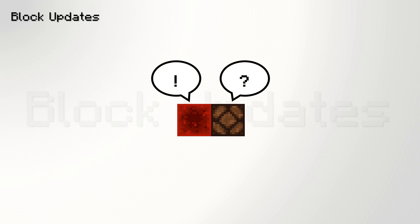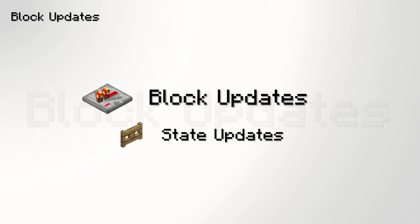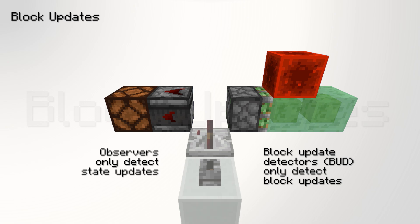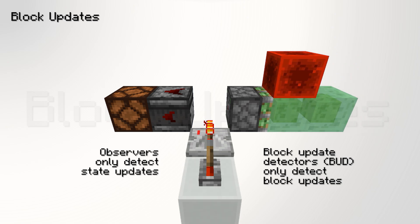The blocks themselves will check if they should do something when receiving the update. There are two main types of updates, which are block updates and state updates. In this video, we will only be focusing on block updates, also known as neighbor change updates. When a player is placing a block, the change will send out both block updates and state updates, but when a repeater is turning on and off, it will only send block updates in front of it to tell the things in front that they are powered or not.